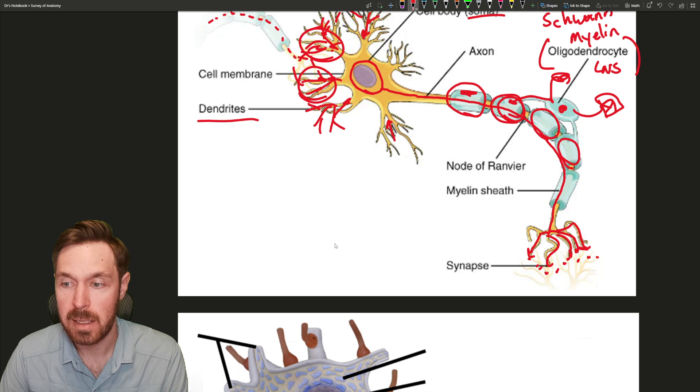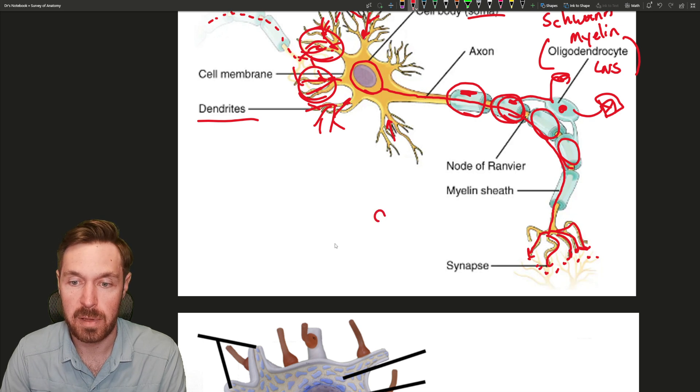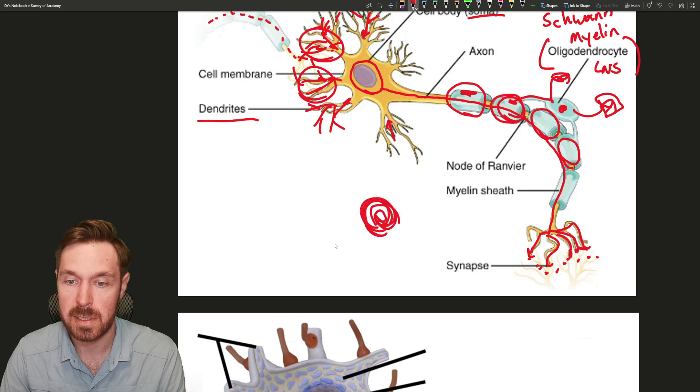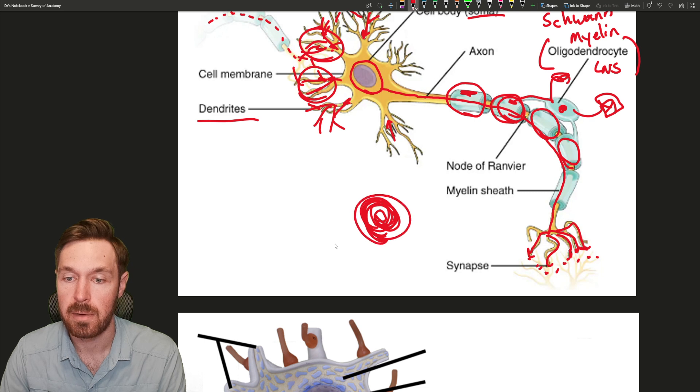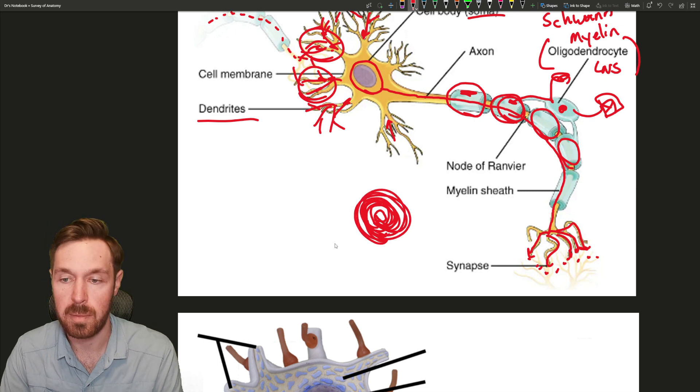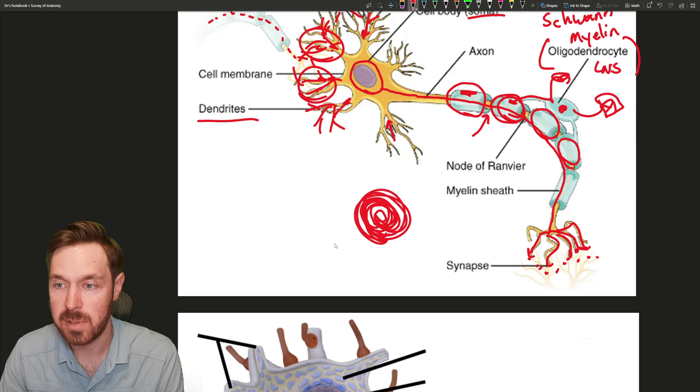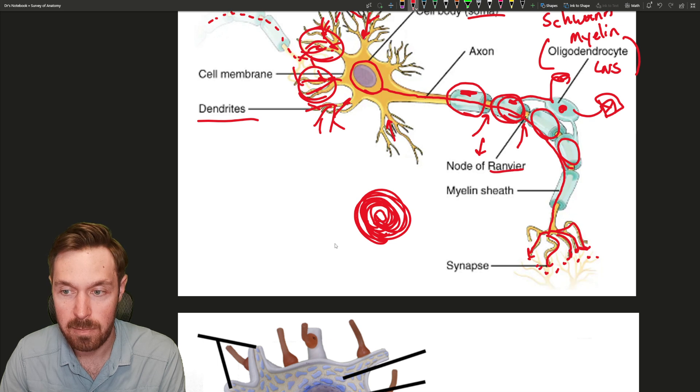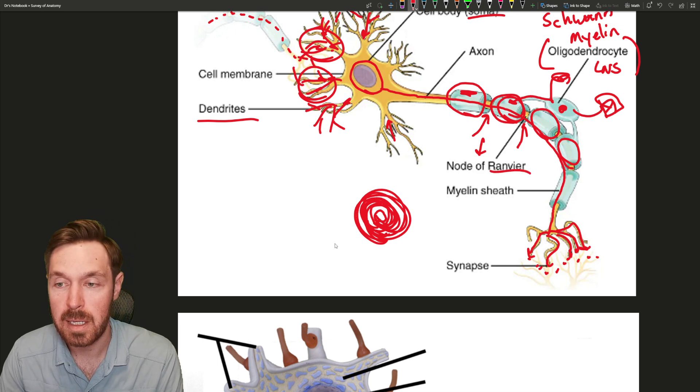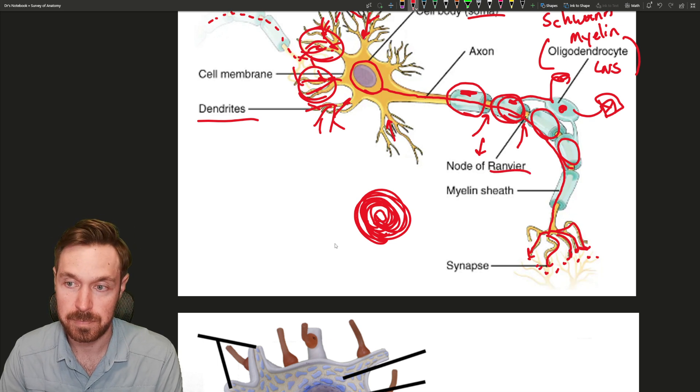This myelin sheath, if we have the axon in the middle, this myelin just kind of wraps around that axon forming these dense layers of insulation. And then we have these little gaps, these gaps are formerly known as the nodes of Ranvier.